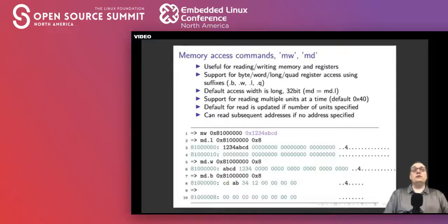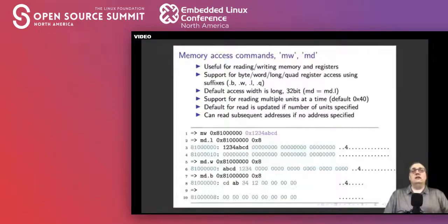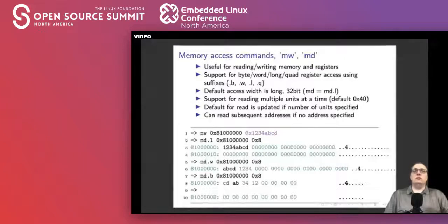The commands mw and md are useful for reading and writing values to memory and registers. By default they operate on a long (32 bits), specified by the .l postfix, but you can make it 8, 16, 32, or 64 bits using .b, .w, .l, and .q — for byte, word, long, and quad word. You can read multiple units at a time by providing a length. If you press enter by itself it repeats the previous command, allowing you to scroll through memory addresses incrementally.